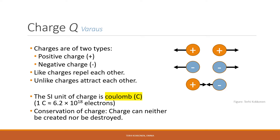The SI-derived unit of electric charge is the Coulomb, named after French physicist Charles-Augustin de Coulomb. The charge can be transferred from one body to another body, but no charge is being created or destroyed.